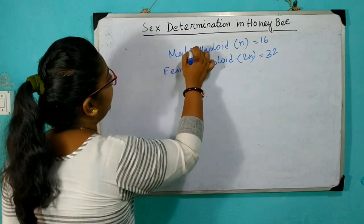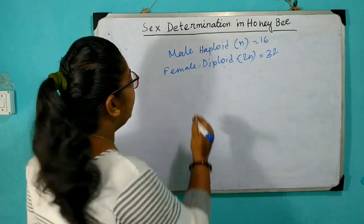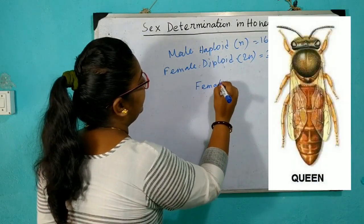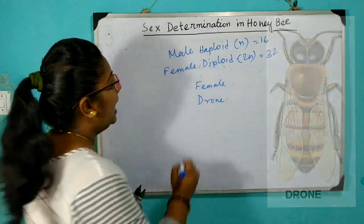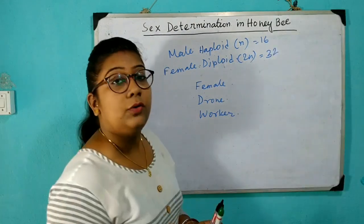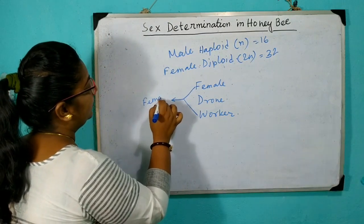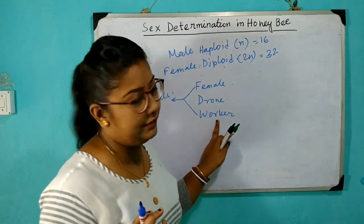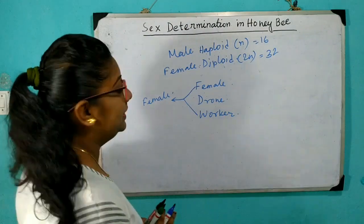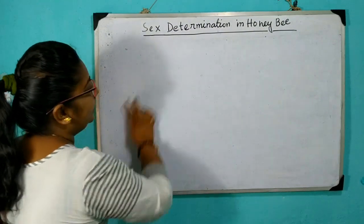We will talk about three types of honeybee which are the most important. One is the queen, which is female. Two is the drone. Three is the worker. Both the queen and worker are female, while the drone is male.